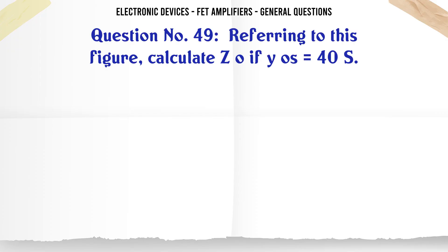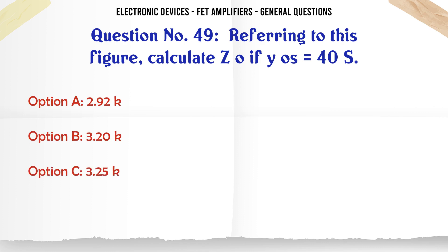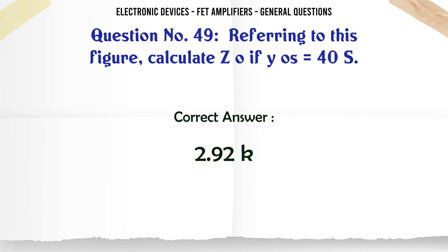Referring to this figure, calculate ZO for YOS = 40µS. A. 2.92KΩ. B. 3.20KΩ. C. 3.25KΩ. D. 3.75KΩ. The correct answer is 2.92KΩ.